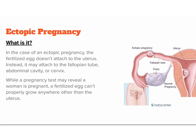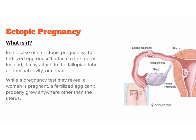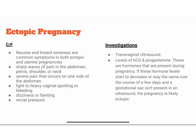In the case of an ectopic pregnancy, the fertilized egg doesn't attach to the uterus. Instead, it may attach to the fallopian tube, abdominal cavity, or cervix. While a pregnancy test may reveal a woman is pregnant, a fertilized egg cannot properly grow anywhere other than the uterus. Clinical features are nausea and breast soreness, sharp waves of pain in the abdomen, pelvis, shoulder or neck, severe pain on one side of the abdomen, light to heavy vaginal spotting or bleeding, dizziness or fainting, and rectal pressure. Investigations include transvaginal ultrasound and levels of HCG and progesterone. If these hormone levels start to decrease or stay the same over a few days and a gestational sac isn't present on ultrasound, the pregnancy is likely to be ectopic.